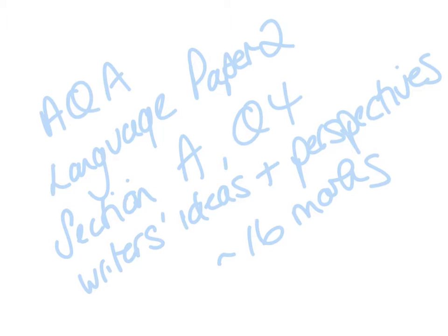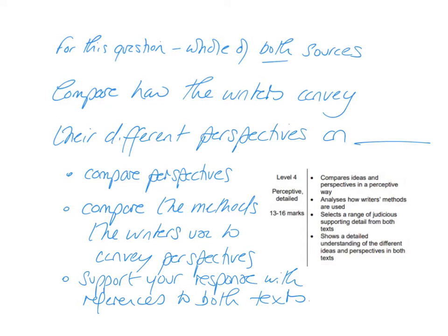This is looking at how to do AQA Language Paper 2, Section B, Question 4 — the question that deals with writers' ideas and perspectives. It's worth 16 marks, so it's the largest question on that section. Remember that this is dealing with nonfiction texts, where you get two extracts you haven't seen before: one from the 19th century and one more modern. The questions always follow the same pattern.